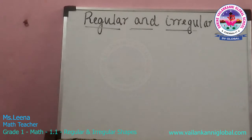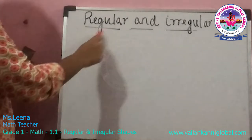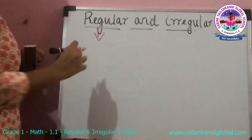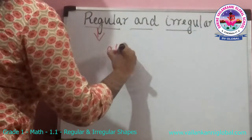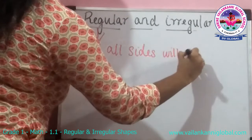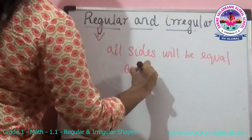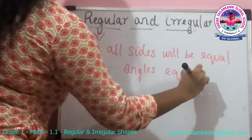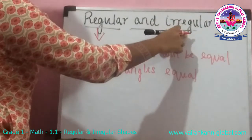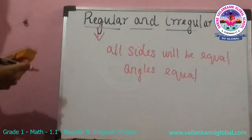I have learnt about the 2D shapes. In this video we are going to learn about regular and irregular shapes. A regular shape is one in which all sides will be equal and also the angles will be equal. If it is an irregular shape, the sides will not be equal as well as the angles will not be equal.